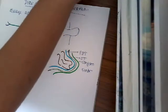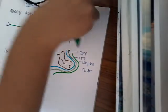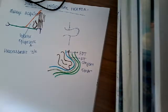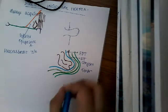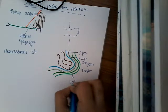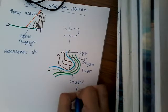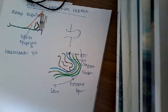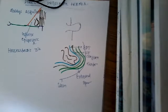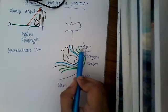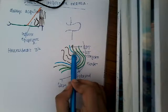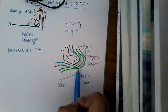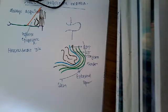Above the conjoined tendon there is external spermatic fascia, and then finally there is skin. So the layers of direct inguinal hernia from inside out are: extraperitoneal tissue, fascia transversalis, conjoined tendon, external spermatic fascia, and skin.